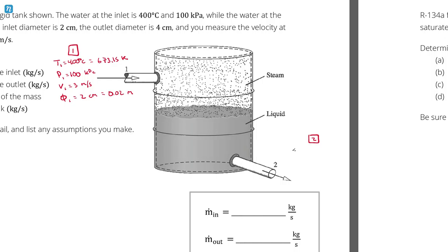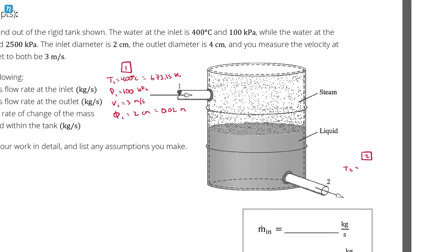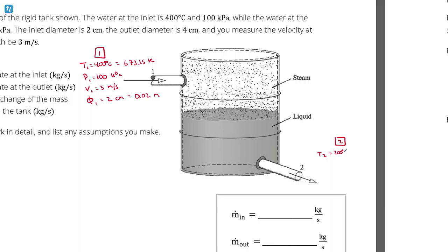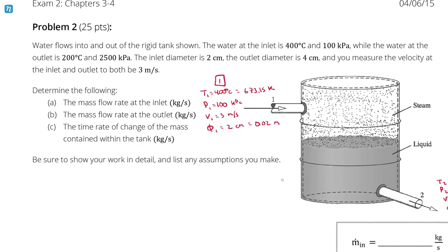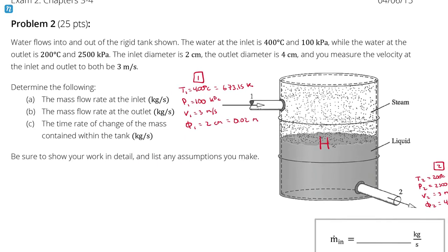At state 2, the temperature at the outlet is 200 degrees Celsius, equal to 473.15 Kelvin. The velocity at the exit is 3 meters per second, and the diameter at state 2 is 4 centimeters, which is 0.04 meters. This is water, and it's a rigid tank, so a rigid tank means there is no change in volume.